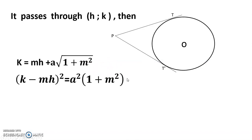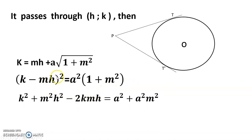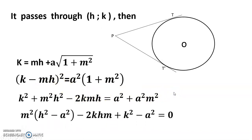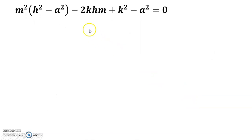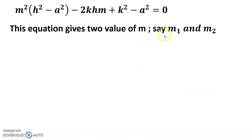Rearranging: (k − mh)² = a²(1 + m²). Expanding using the (a − b)² formula: k² + m²h² − 2kmh = a² + a²m². This equation gives two values of m, say m₁ and m₂.